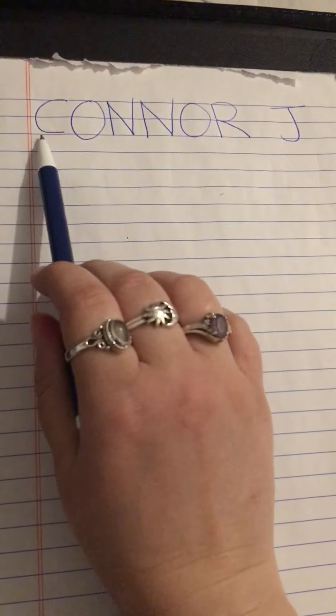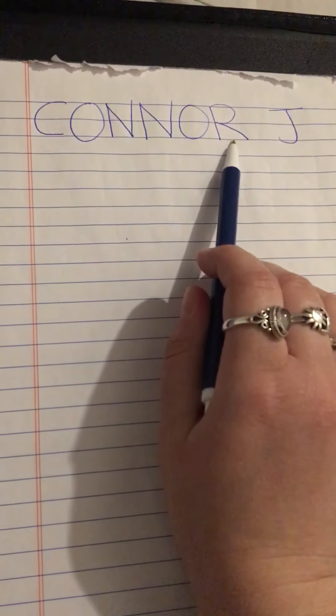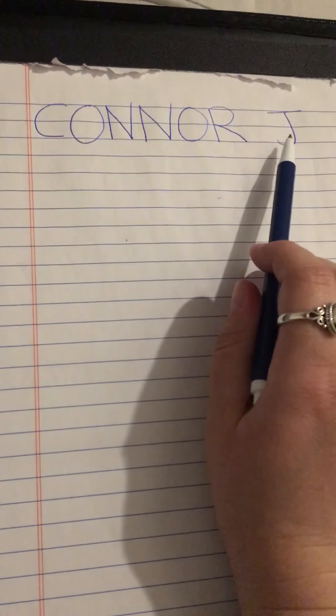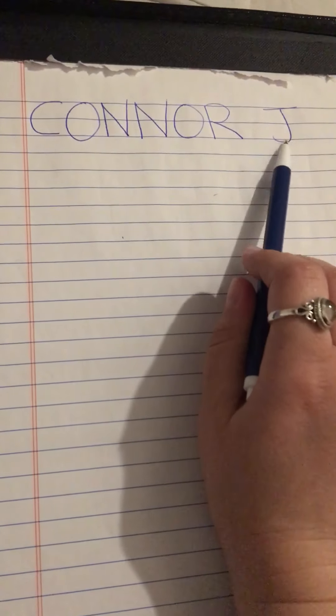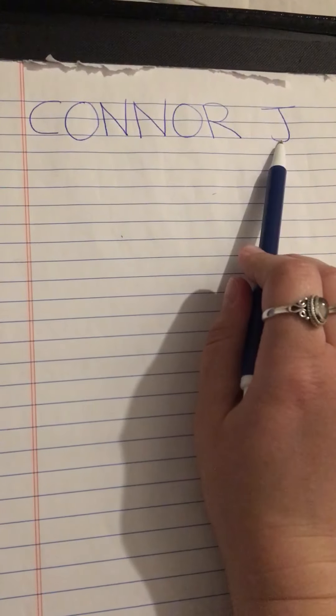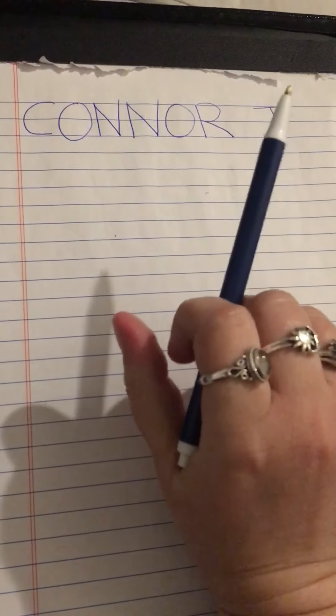Hello my friends. In this video we're going to work on writing our friend Connor J's name. Connor's first name is Connor and we use J for the first letter of his last name, so we know which Connor we're talking about because our class has two.